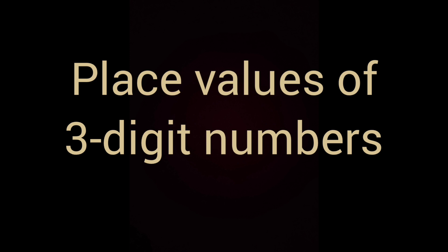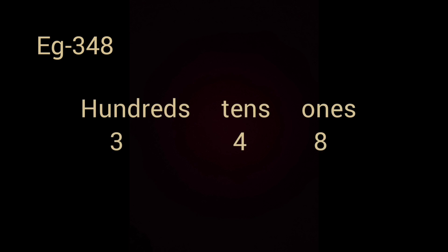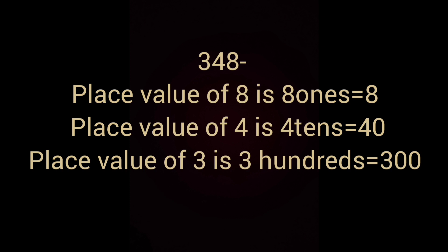Next, let us learn how to write 3-digit numbers according to their place values. Example: 348. As we have learnt 2-digit numbers, the first 2 place values are 1s and 10s. For 348, the place value of 8 is 8 ones, that means just 8. Place value of 4 is 4 tens, which means 40. Place value of 3 is 3 hundreds, which means 300. So a 3-digit number has 3 places: 1st place is 1s place, 2nd place is 10s place, 3rd place is 100s place.